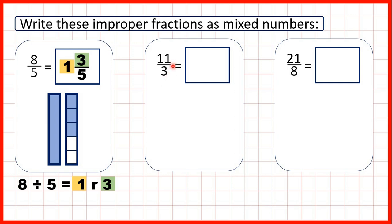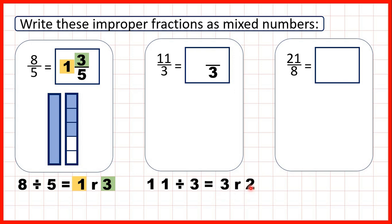Now we have 11 over 3, or 11 thirds. Remember, the denominator of our mixed number stays the same, and we divide the numerator by the denominator — so divide 11 by 3 to get our whole number and numerator. 11 divided by 3 is 3 remainder 2, because 3 times 3 is 9 and we need 2 more to reach 11.